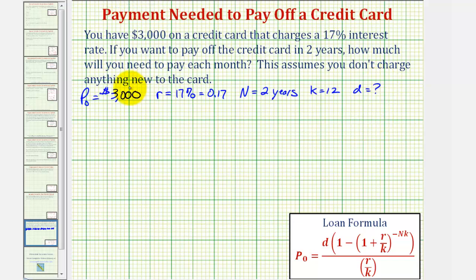So to set our equation up, we would have 3,000 equals this fraction here on the right. Looking at the numerator, we would have D times the quantity one minus the quantity one plus R divided by K, which is 0.17 divided by 12, raised to the negative 2 times 12 power. This is all divided by the fraction R over K, or 0.17 divided by 12.